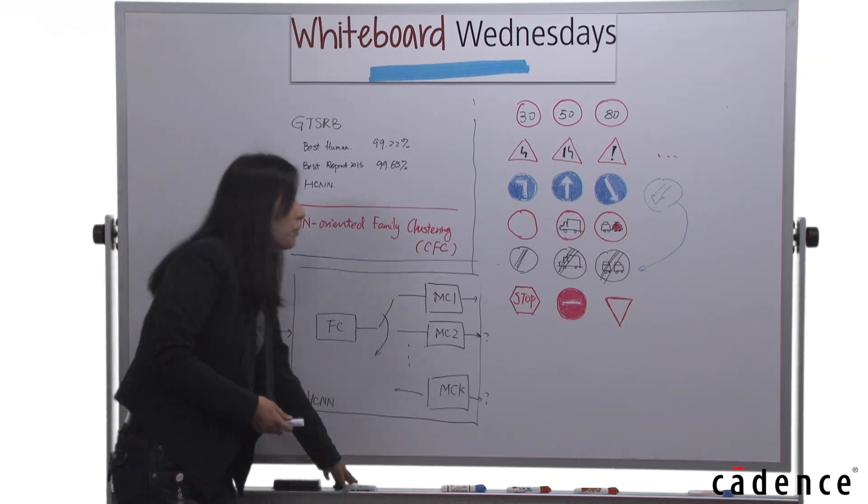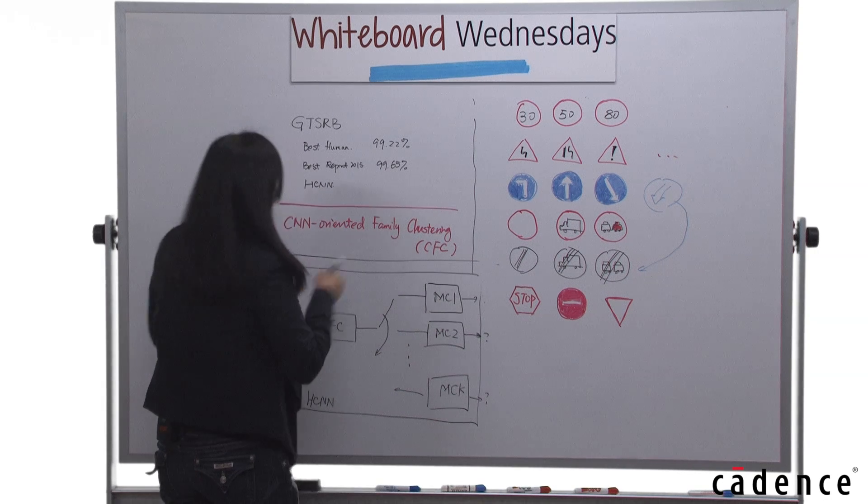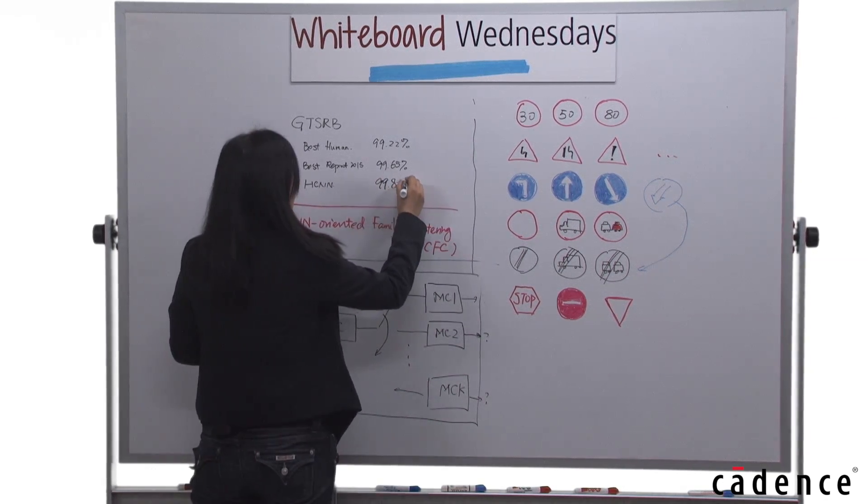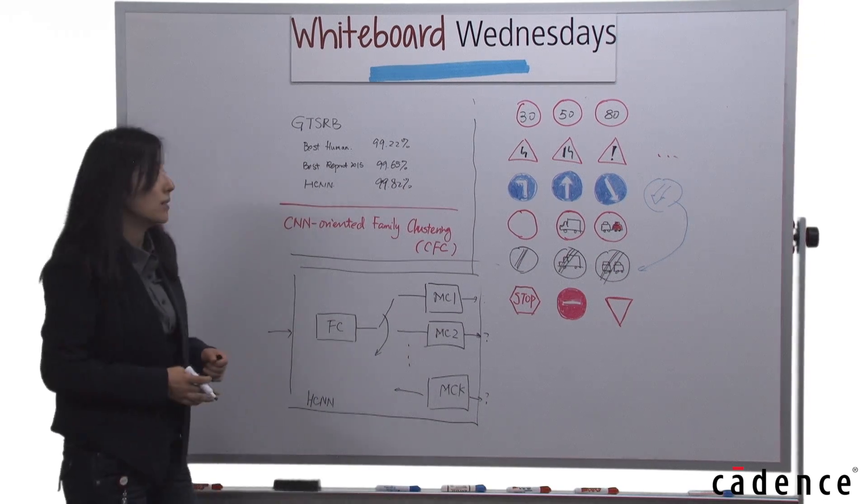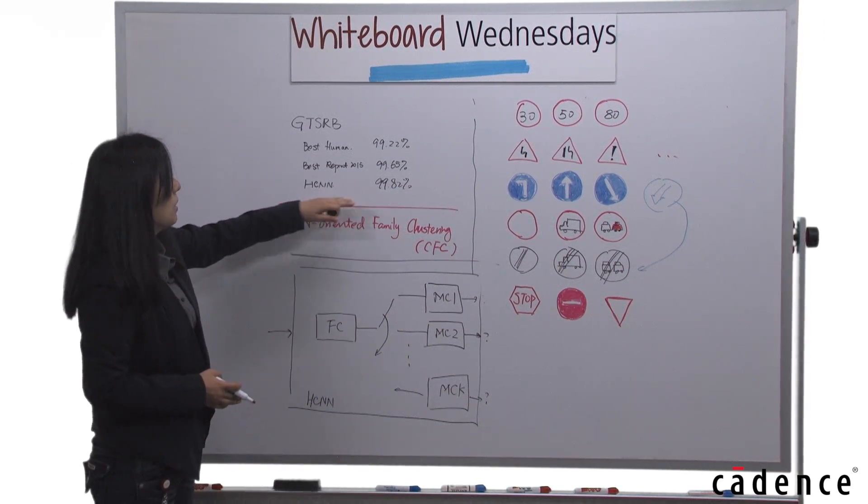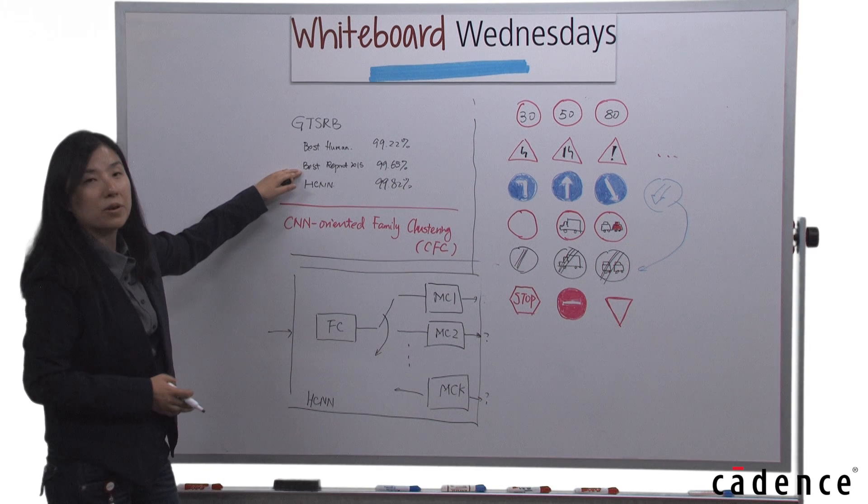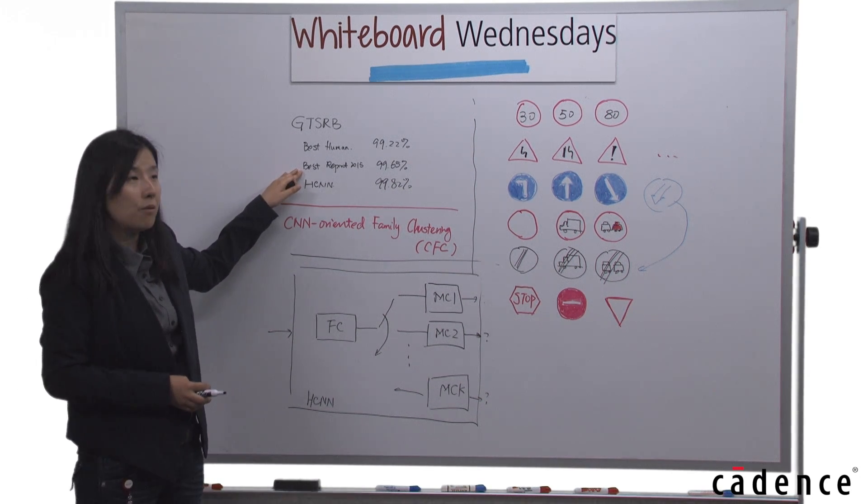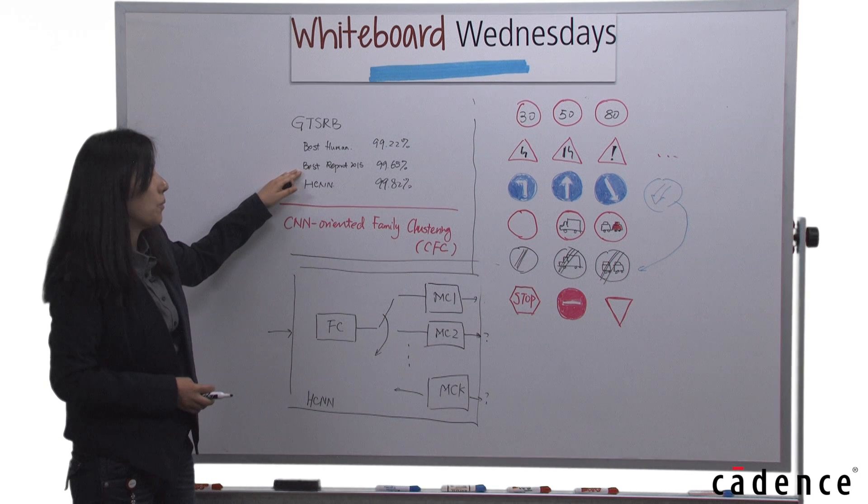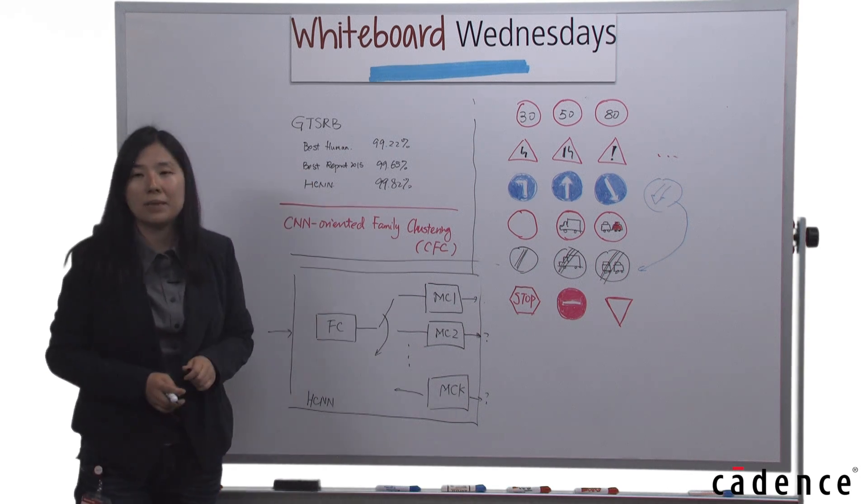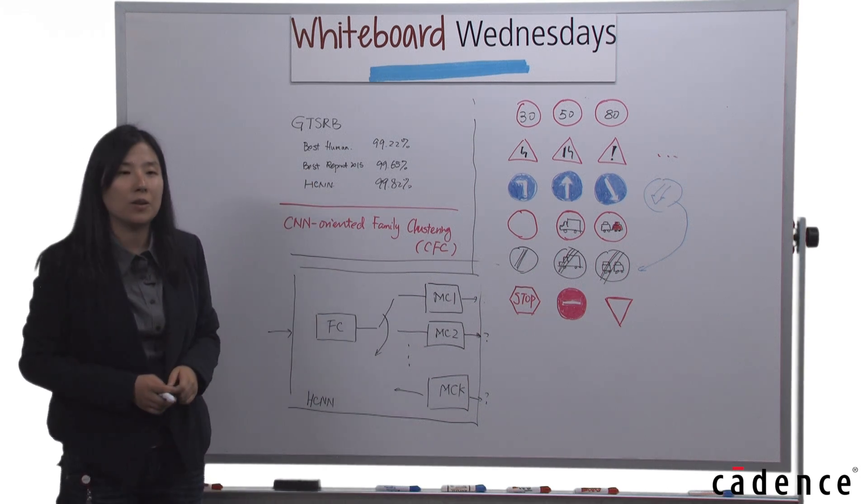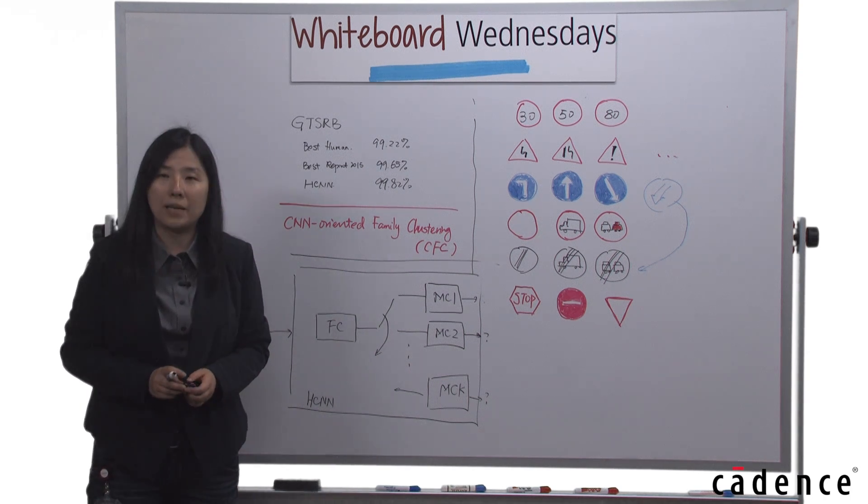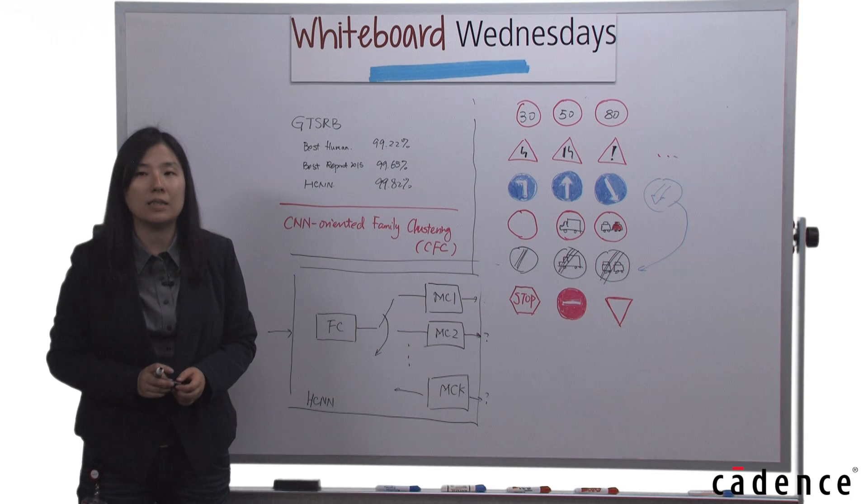We achieve 99.82% correct detection rate. Compared to the best reported results in papers published in 2012-2015, we have about 20 times less complexity. We can claim to have the best performance with the least complexity.